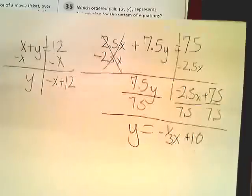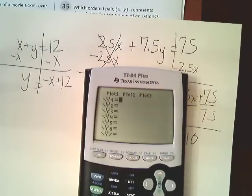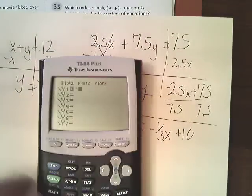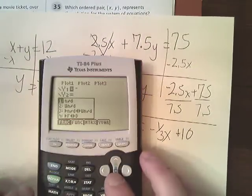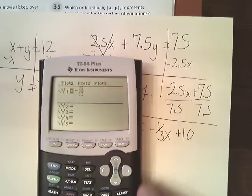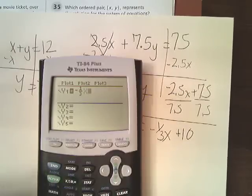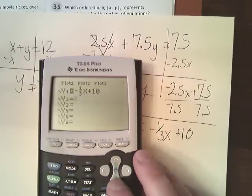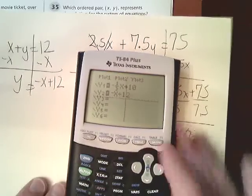Now I can graph both of these and see if there is an intersection. So I'm going to go into y equals, type in negative, and I'm going to actually put it in as a fraction. So I'm going to go up here and go to the fraction button, which is the ND thing. Negative 1 third x plus 10. And on the second one, I'm going to go down and just type in negative x plus 12. And graph them.